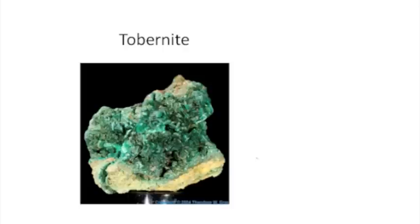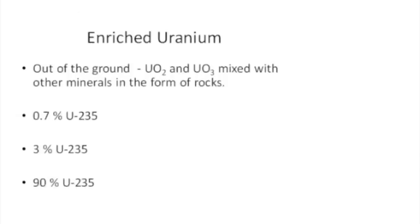First of all, the uranium is located, it's dug out of the ground, it's mixed in with other minerals. The uranium oxide needs to be separated from the other minerals in which it's mixed in the rocks. Out of the ground, it's mostly in the form of uranium oxide, either uranium dioxide or trioxide. But it needs to be separated, and that takes energy and money and effort to do. As it is, that uranium is only about 0.7% uranium-235 when it comes out of the ground. So it has to be enriched to get it up to fuel-grade uranium would be about 3% uranium-235, and weapons-grade uranium has to be about 90% uranium. So the enriching of uranium to get up to these higher concentrations of uranium-235 is an expensive process.